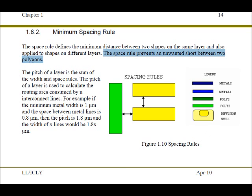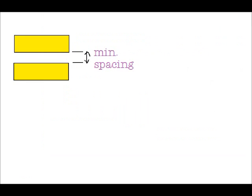Let's illustrate this. We have two polygons on the same layer and they are spaced out such that they meet the minimum spacing rule.